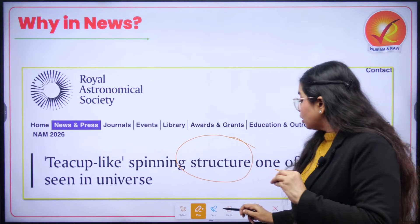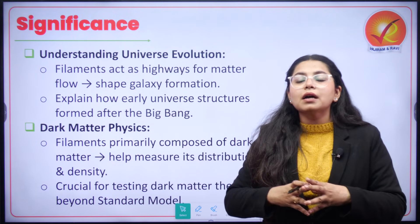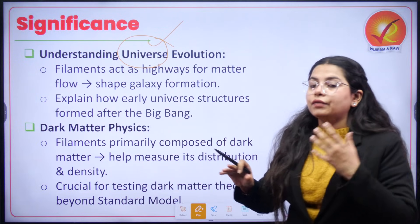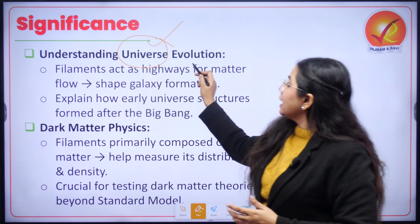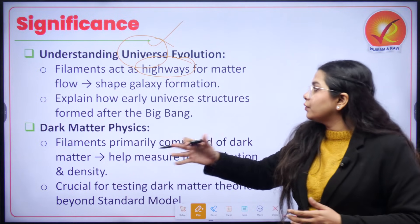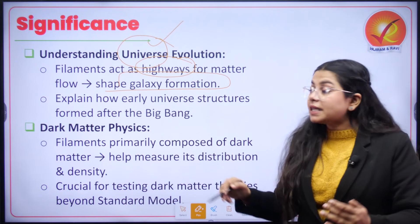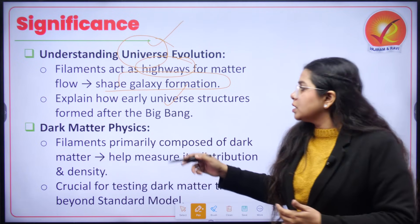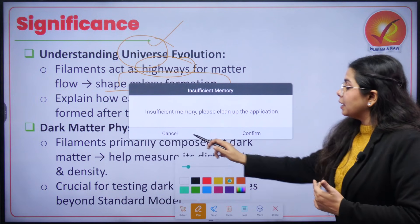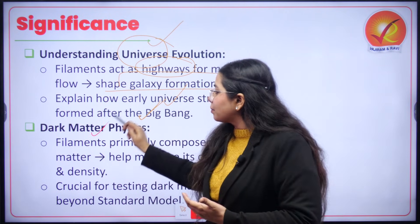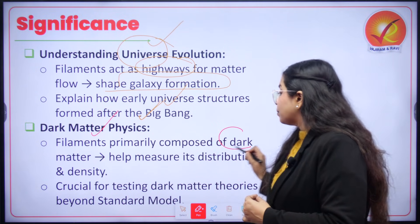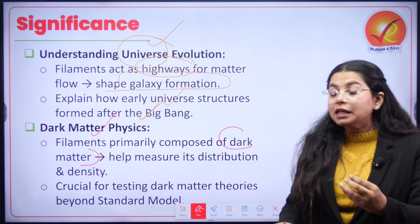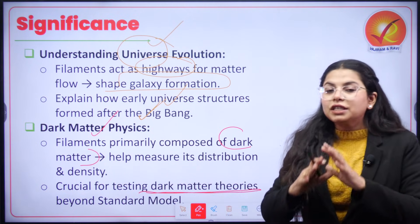When talking about such a concept, its significance is much higher because these larger structures give us a direct perspective into understanding how our universe has evolved. These cosmic filaments are basically the highways for how exactly matter has flowed and galaxy formation has taken place. It explains how early universe structures formed especially after the Big Bang, and better understanding provides more evidence for the Big Bang theory. They also directly help in understanding dark matter physics — filaments are primarily composed of dark matter — so they help in understanding mass distribution, which is fundamental for understanding dark matter theories beyond the standard model.